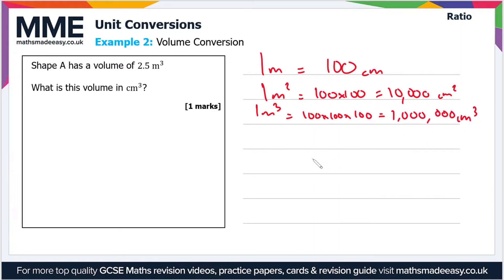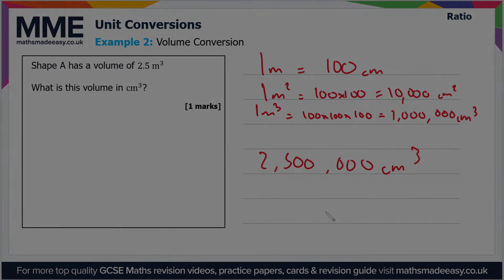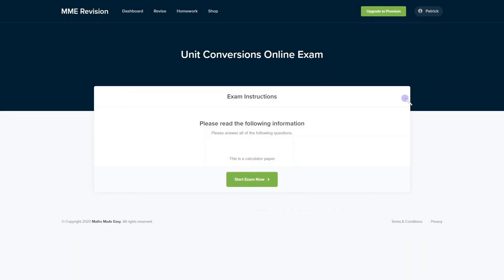So all we have to do is times 2.5 by 1 million to get the volume in centimeters cubed, which is just two and a half million centimeters cubed. Now unit conversions is a skill that definitely takes some practice, but we've made it easy for you.